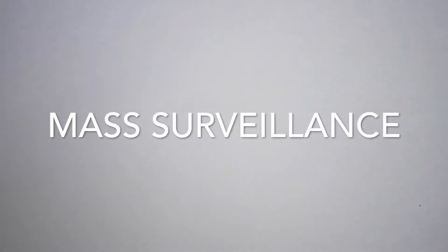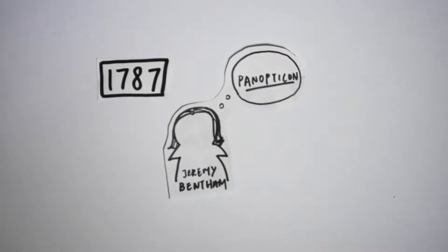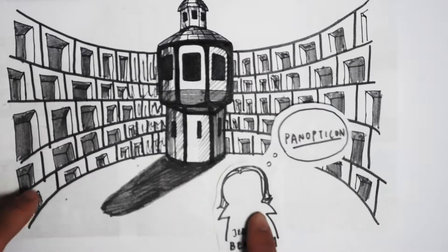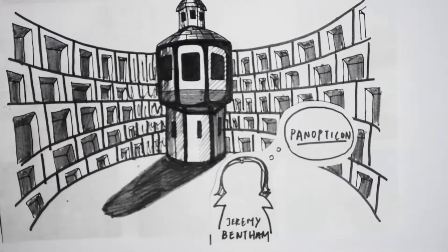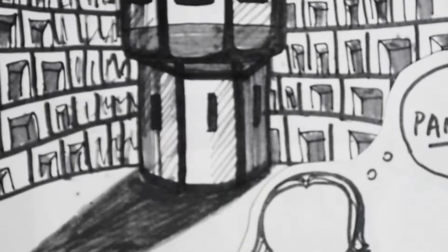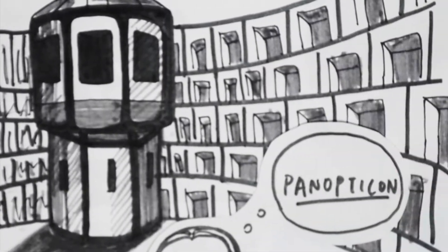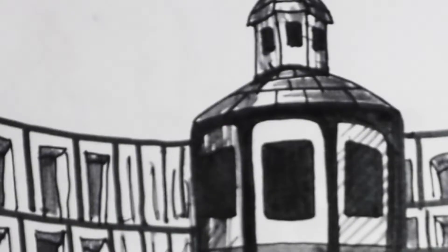The concept of mass surveillance isn't a relatively new subject. In 1787, British philosopher Jeremy Bentham designed the Panopticon, a structure for observing prisoners. This structure is an enormous tower in the center of a circular prison, allowing a single watchman to observe all the prisoners in the jail.